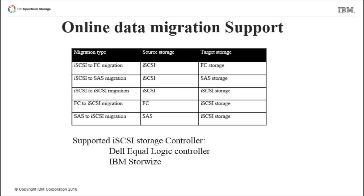Data migration feature for iSCSI connected storage controllers is introduced with the 7.7.0 release. In 7.7.0 release, IBM's SVC and Storwize initiators support online data migration from Dell EqualLogic storage controllers and IBM Storwize storage controllers.